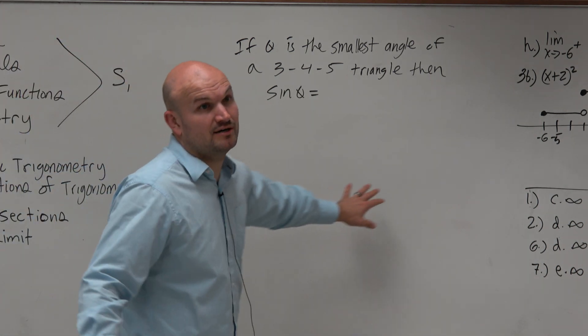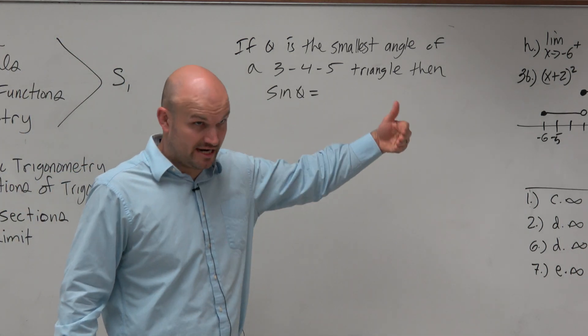A 3, 4, 5 triangle is a special type of right triangle. If you guys remember, that's a Pythagorean triple.